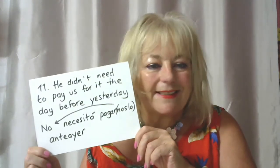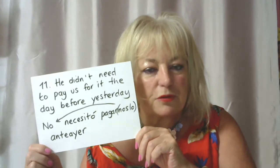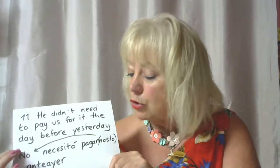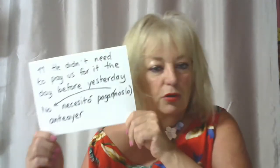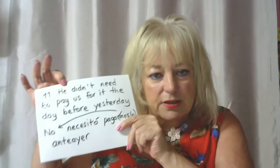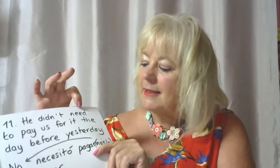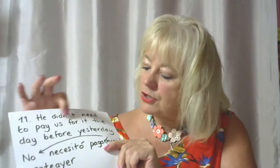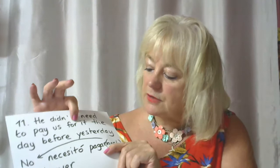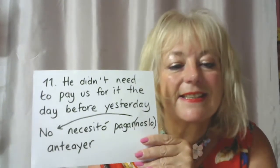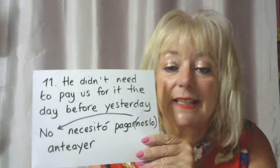Number eleven: He didn't need to pay us for it the day before yesterday. No necesitó pagárnoslo anteayer, or no nos lo necesitó pagar anteayer. Breaking it down: 'He' — the subject; 'didn't' — negative past auxiliary verb; 'need' — the main verb; 'to pay' — pagar; 'us' — the indirect object; 'for it' — the direct object; 'the day before yesterday'. Eso es muy complicado en inglés esta frase. He didn't need to pay us for it the day before yesterday.